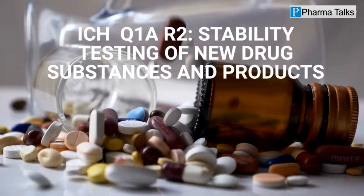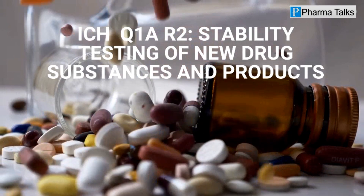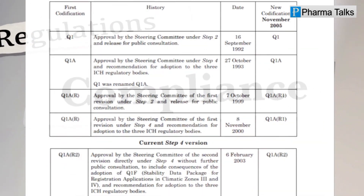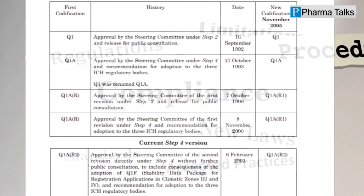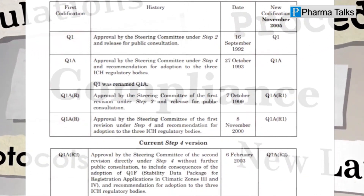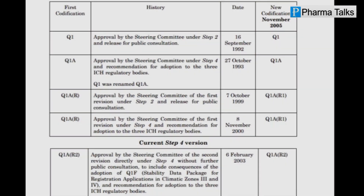The Q1AR2 guideline on Stability Testing of New Drug Substances and Products was first published in 1993 by the International Conference on Harmonization as part of a series of guidelines aimed at harmonizing the technical requirements for the registration of pharmaceuticals for human use. The guideline was updated in 2003 to provide further clarity and guidance on stability testing requirements.